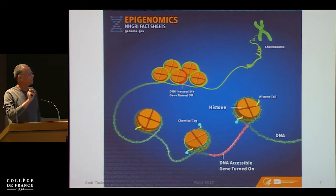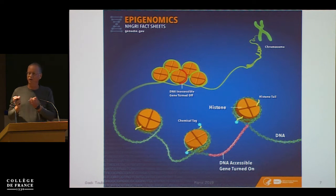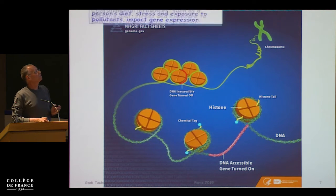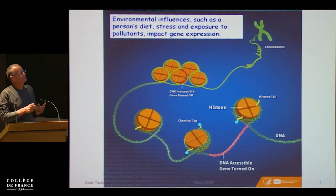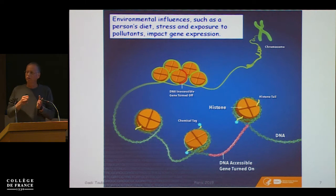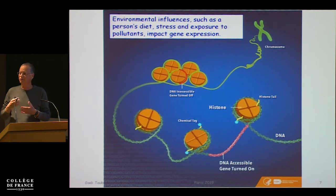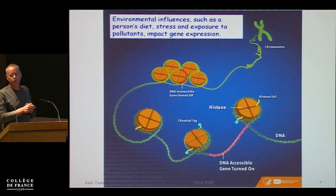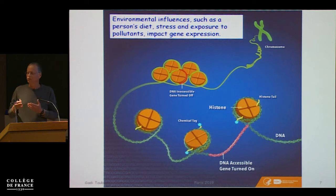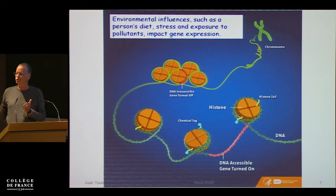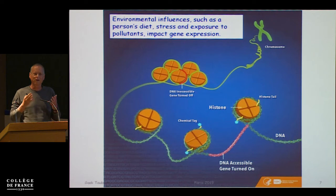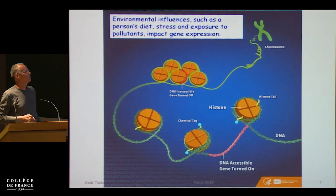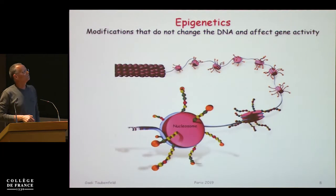Turning a gene on and off is something that happens in your body all the time, every day — as a result of your diet, stress, and exposure to pollution. It's not something that just happened in your childhood; it happens all the time. The question is: what makes it happen? How does it work?